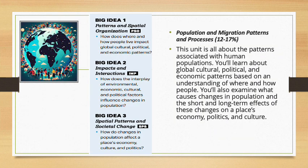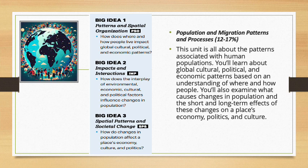Unit 2 talks about population and migration patterns and processes, and it carries 12 to 17% of your mark on the external. This unit is all about the patterns associated with human populations. You will learn about global cultural, political, and economic patterns based on an understanding of where and how people live. We have the same big ideas but different essential questions.